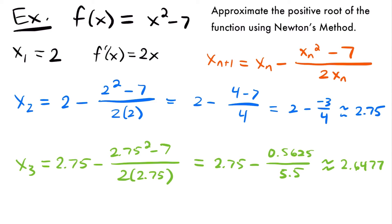We could stop at any point once we feel we have a good approximation. Most problems tell you to stop when two successive values are less than 0.001 apart or something like that, but this problem didn't specify that. So I'm going to do one more approximation — let's find x sub 4 and see how close it is to our last approximation of 2.6477. If it's close enough, I'll be satisfied with that as a good approximation for the positive x-intercept.